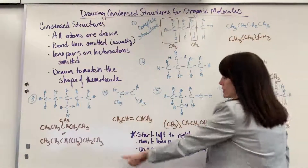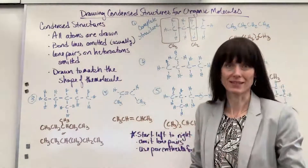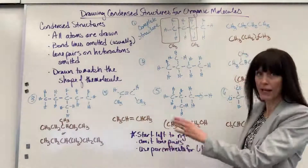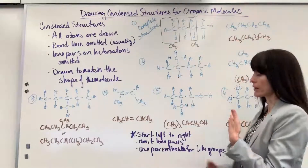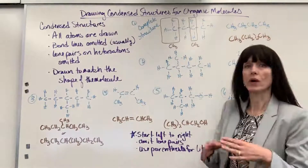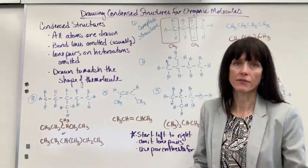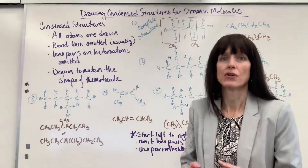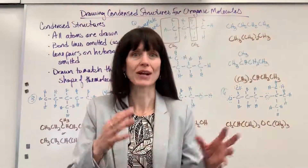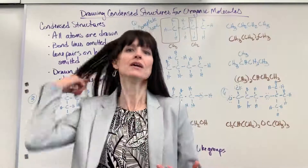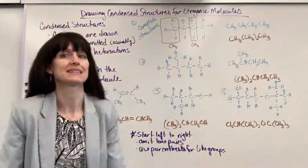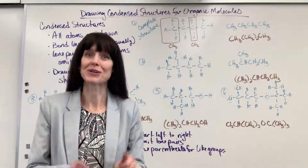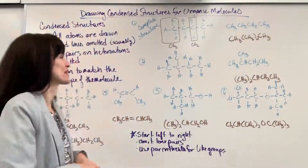The driving principles are: we always go from left to right when writing organic molecules; we omit the lone pairs off of the heteroatoms; and we use parentheses for groups that are alike, to further simplify. We're going to do six examples, and from these I'm confident you'll be able to write your own condensed structures.